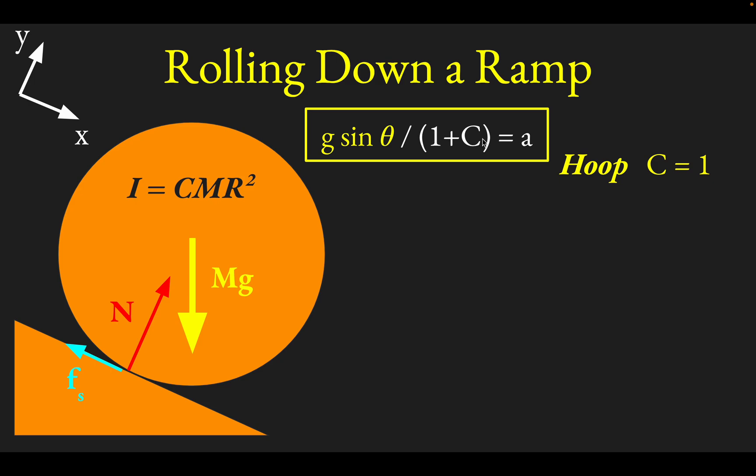So if C equals 1, you'd have 1 plus 1 equals 2 in the denominator. And we'll see later that it'll be g sine theta over 2 will be the acceleration of a hoop. Other shapes that we might consider are the disk where C is 1 half and a solid sphere where C is 2 fifths.